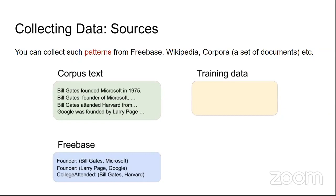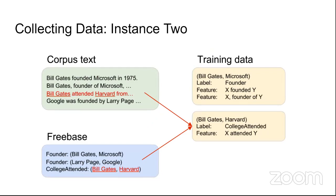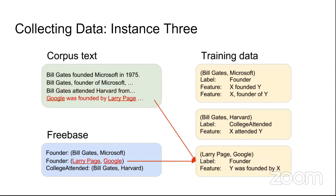How to collect data using Freebase and Wikipedia: if your corpus says 'Bill Gates founded Microsoft in 1975' and 'Bill Gates, founder of Microsoft, attended Harvard,' and Freebase gives you relations like founder(Bill Gates, Microsoft), founder(Larry Page, Google), college_attended(Bill Gates, Harvard) — you can collect training data. The first instance: Bill Gates–Microsoft, label=founder, features 'X founded Y' and 'X is the founder of Y.'